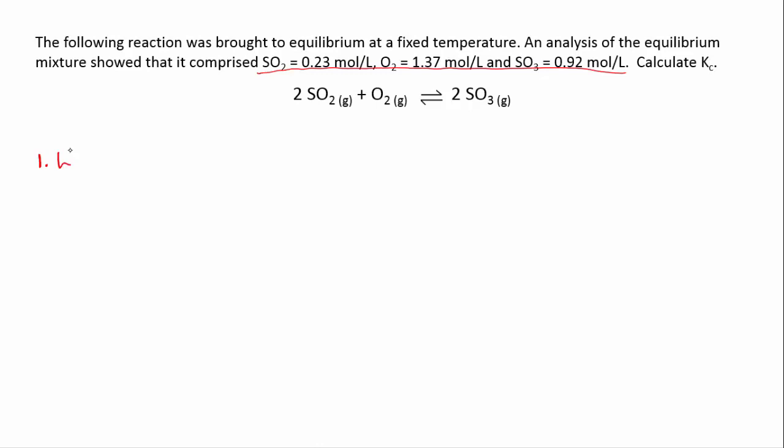So our first step is always to write the equilibrium expression because you can't go anywhere without it. We write Keq or Kc, and it equals the product's concentration of sulfur trioxide raised to the power of 2, over concentration of sulfur dioxide also raised to the power of 2, times the concentration of oxygen. It has a stoichiometric coefficient of 1, so we just leave it as is.